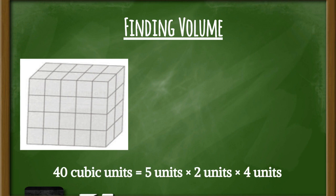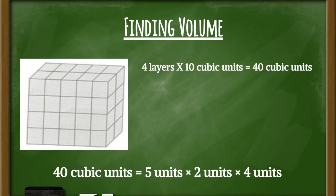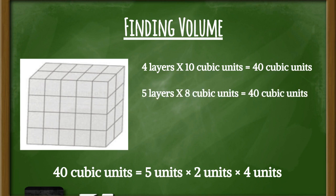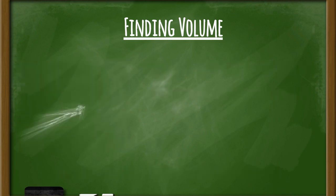If we solve this problem, we find that we have 40 cubic units. We can also break the prism down: if there are four layers and each layer has 10, then four times 10 gives us the same answer. Or, if we count layers of eight, there are five of them — five times eight also gives us 40 cubic units. So there are different ways to solve this: multiplying length times width times height, or breaking the shape into layers.